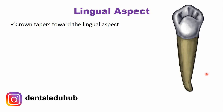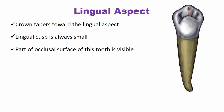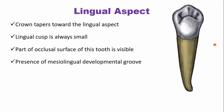The crown tapers towards the lingual aspect, where you can see the mesial and distal sides of the crown. The lingual cusp is always small, and because of this, you can see part of the occlusal surface from the lingual aspect, along with the cusp tip and cuspal slopes. One important feature from the lingual aspect is the mesiolingual developmental groove, which crosses the mesial marginal ridge and continues on the tooth surface.